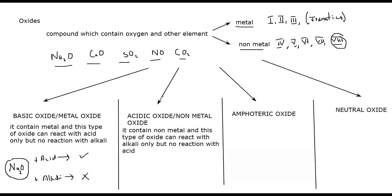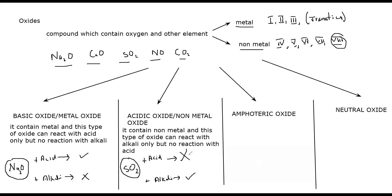So if an oxide contains a non-metal — like sulfur dioxide, SO₂ — if I add an acid, there is no reaction. But if I add an alkali, it will react. So this type of oxide which can only react with an alkali but does not react with acid — we call that a non-metal oxide or acidic oxide. Why? Because it contains a non-metal.